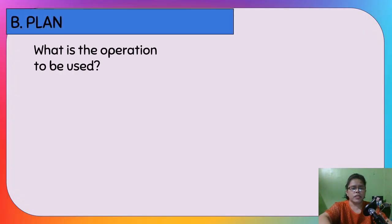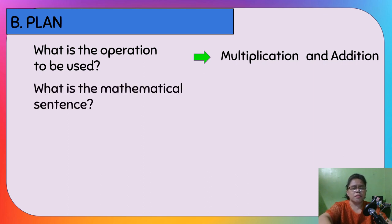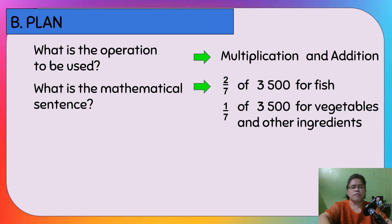Plan. The operations to be used are multiplication and addition. The mathematical sentence: 2/7 of 3,500 for fish, plus 1/7 of 3,500 for vegetables. If we total them, that is 3/7 of 3,500. So we can multiply 3/7 times 3,500. Alternatively, we can add the fractions first, then multiply.